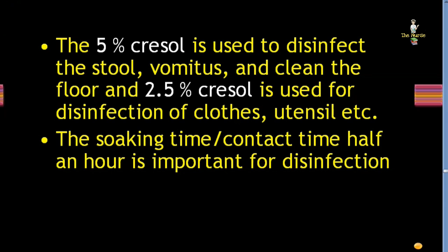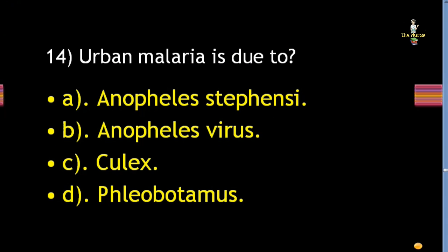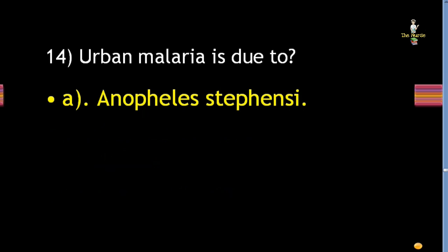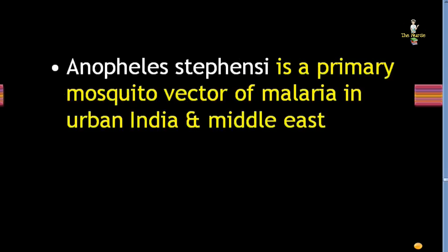Next question: urban malaria is due to Anopheles stephensi, Anopheles virus, Culex, or Phlebotomus? Correct answer is Anopheles stephensi. Anopheles stephensi is the primary mosquito vector of malaria in urban India and the Middle East.